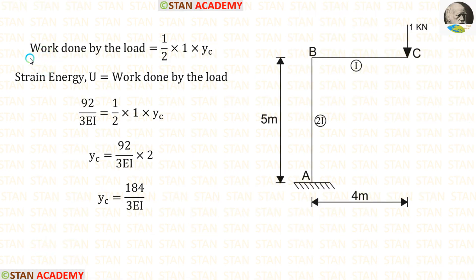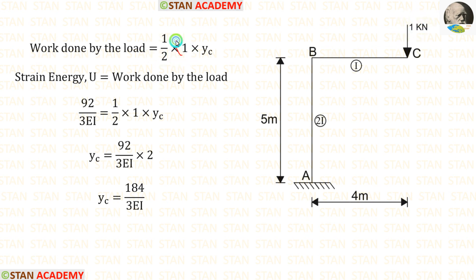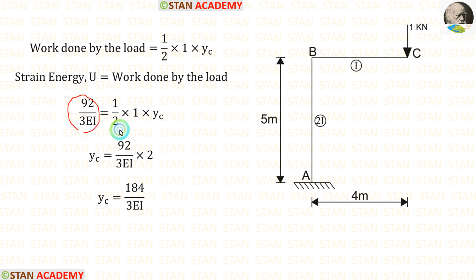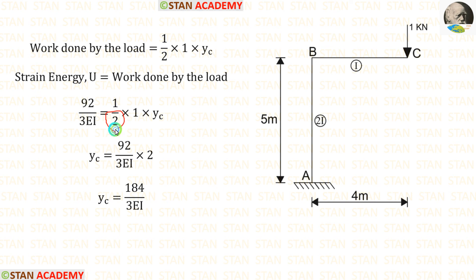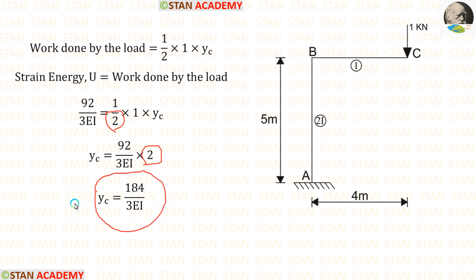We know the formula for work done by the load: (1/2) × load × deflection. Here the load is 1 kN. We know that strain energy equals work done by the load, so we equate the strain energy and the work done. Taking the 2 to the left side gives it in the numerator. Finally, we get the deflection Yc = 184 / (3EI).